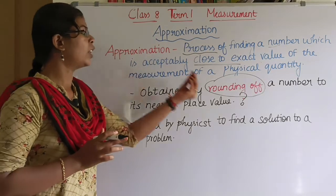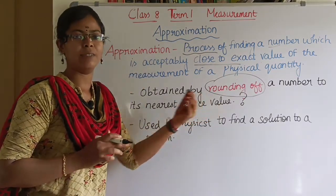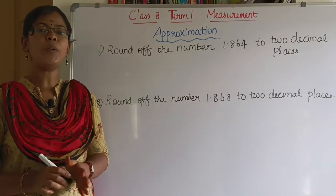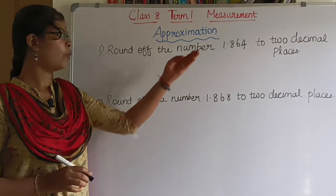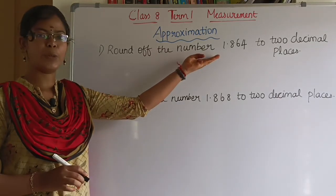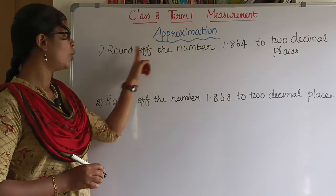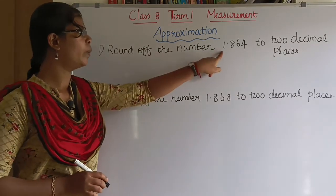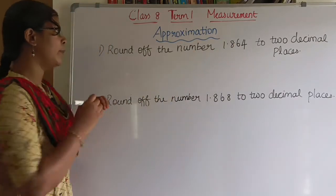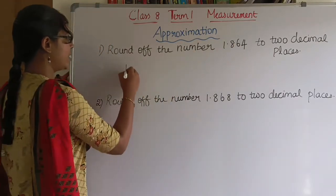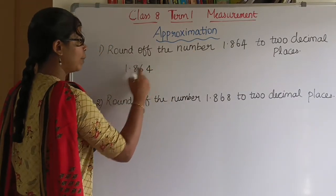Now we will talk about rounding off. Rounding off is how to find a number. For example, rounding off 1.864 to two decimal places — that means we look at two digits after the decimal point, and then we check the third digit.